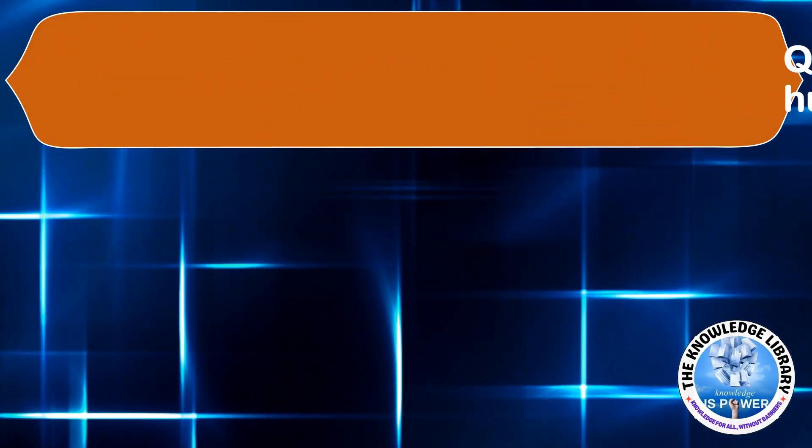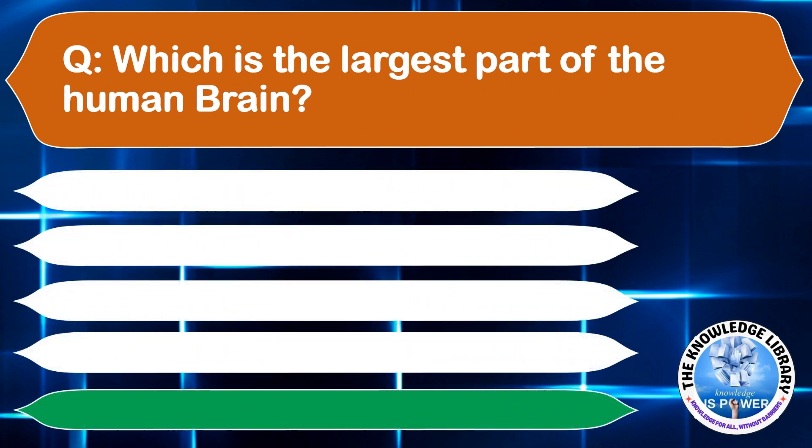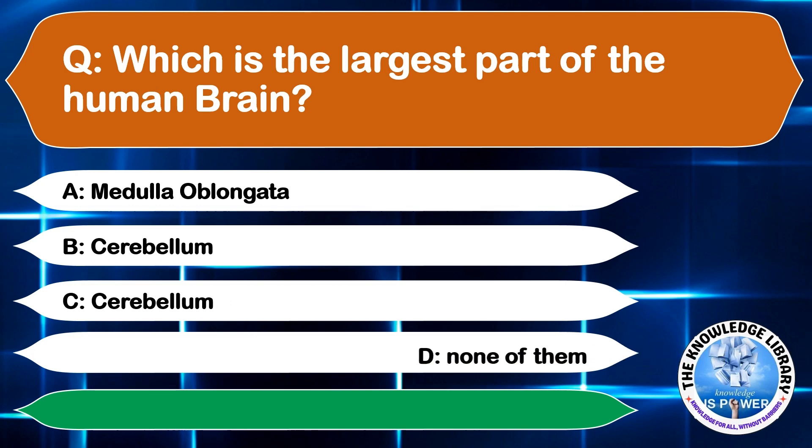Which is the largest part of the human brain? A: Medulla oblongata, B: Cerebellum, C: Cerebrum, D: None of them. The correct answer is option C, Cerebrum.